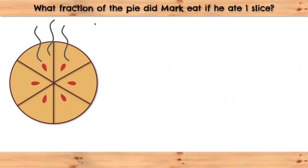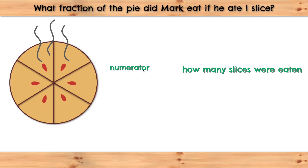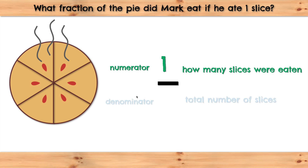What fraction of the pie did Mark eat if he ate one slice? First, we need to figure out the numerator. The numerator stands for how many slices were eaten. We know that Mark ate one slice, so the numerator will have to be one. Now, we need our fraction bar.